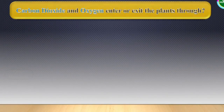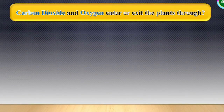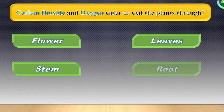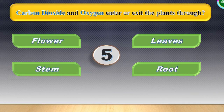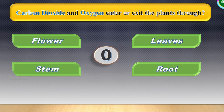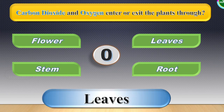Next question: Carbon dioxide and oxygen enter or exit the plant through. The options are visible in the screen. Your time starts now. The correct answer for this one is leaves.